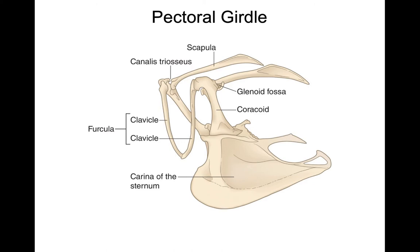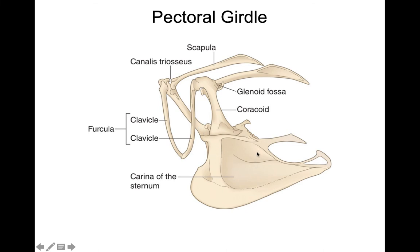Here we have the pectoral girdle. One of the more prominent bones is the coracoid — think of it as a Greek column providing the greatest amount of support to keep the thoracic cavity from being crushed during the powerful downstroke of flight, as the large pectoralis muscle attaches to the sternum and keel and wraps up to the base of the humerus. Another muscle associated with powered flight is the underlying supracoracoideus, whose tendon goes through the triosseal canal to wrap up on the other side of the humerus to return it back to the starting position. The furcula, composed of the two clavicles, also provides spring-like action to help respiration during flight.